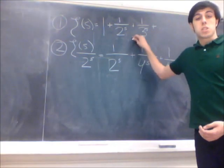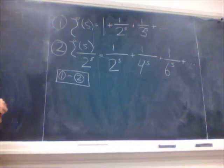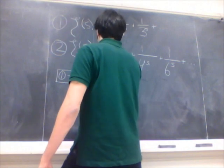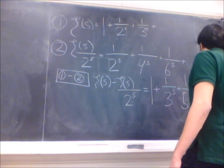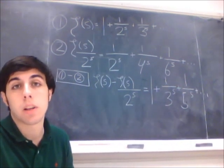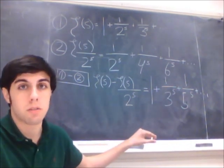Now I'm going to take this top expression and subtract this bottom expression. So you can see on the right side we're left with these denominators that don't have a factor of 2.